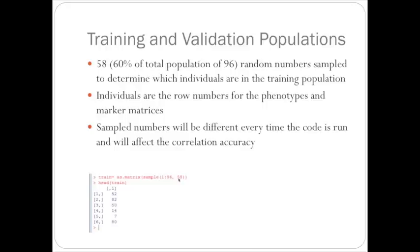These end up being the row numbers of our marker matrix and our phenotype matrix. The sample numbers are different every time the code is run. This will affect the correlation accuracy, so you need to run for many iterations to get a better estimate of the correlation accuracy.